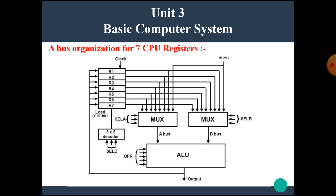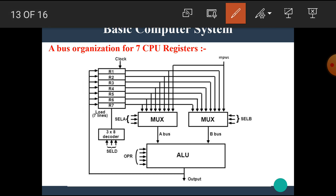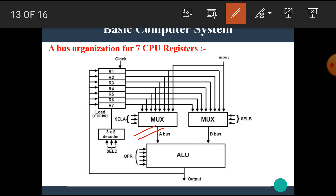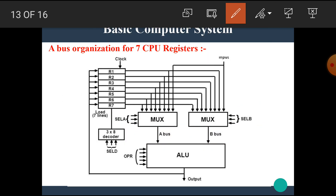Now let's see the bus organization for 7 CPU registers. In this diagram, there are 7 CPU registers R1 to R7, connected with a 3-to-8 line decoder. This decoder has 3 select lines — when the combination is 000, R1 is selected; when 001, R2 is selected, and so on. There are also two multiplexers: multiplexer A produces the A bus, and multiplexer B produces the B bus, each with their own select inputs.